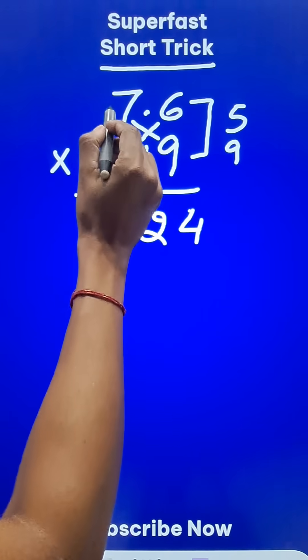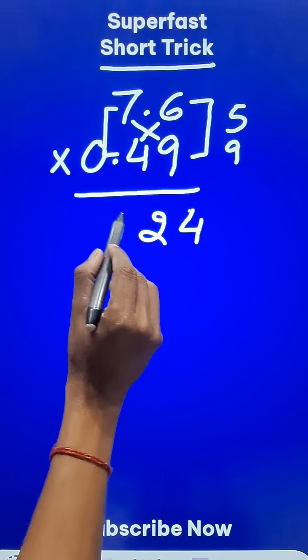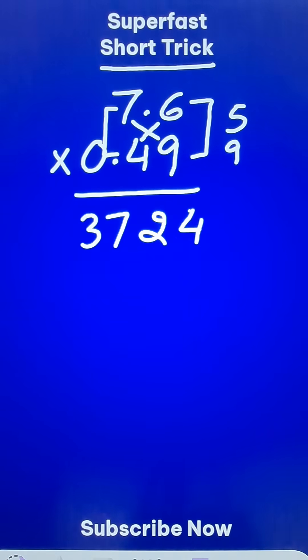So 2 and a 9 carry, and then 7 times 4 is 28 plus 9 is 37. So we have the product of 76 and 49 in a single step.